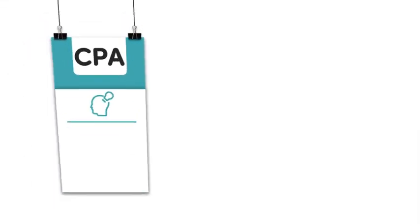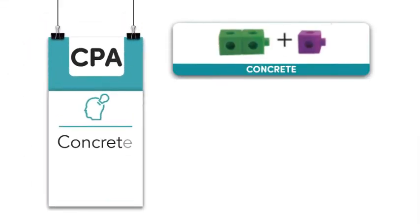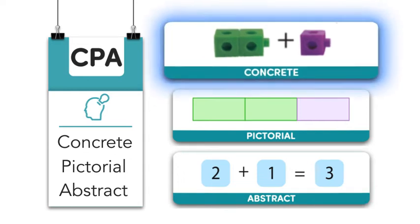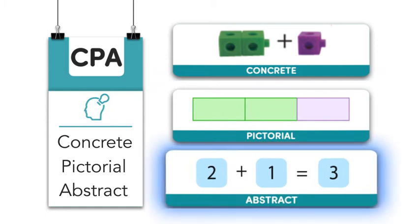Targeting Mathematics adopts the Concrete Pictorial Abstract Approach, an instructional heuristic based on Brunner's conception of the inactive, iconic, and symbolic modes of representation.